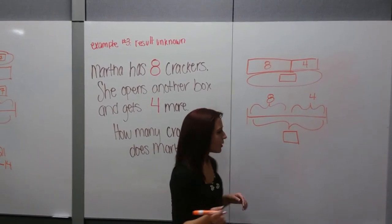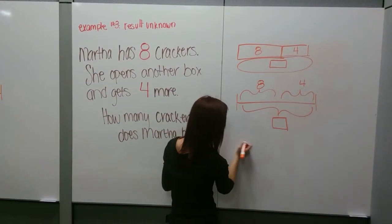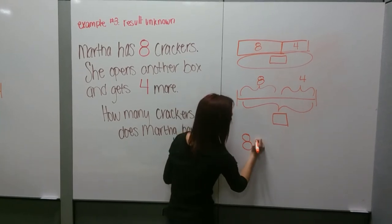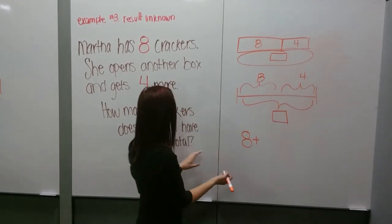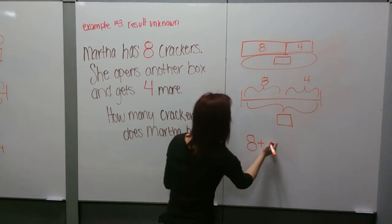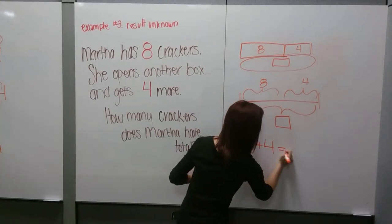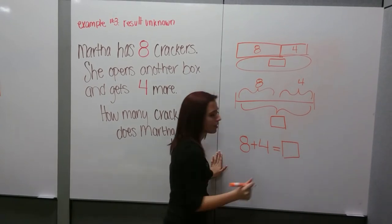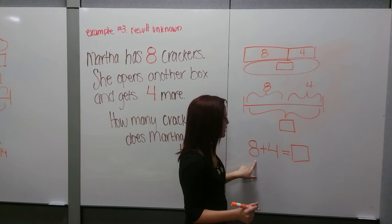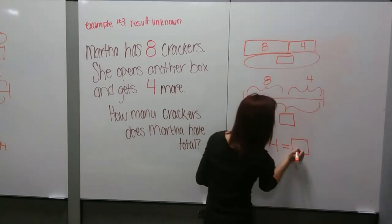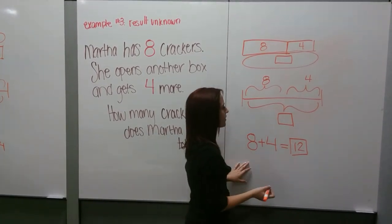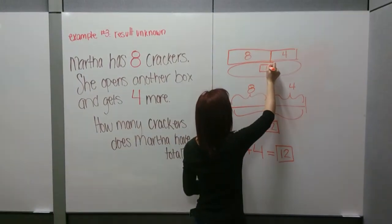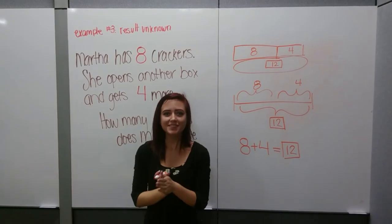To write an equation, we start with how much she began with — she began with 8. Then she got some more, so we put a plus. She got 4 more, so it's 8 plus 4. That's equal to our unknown, which is how many she ended up with at the end. If we do the math, 8 plus 4 is equal to 12. So we go back and put 12 in for our unknown. The end.